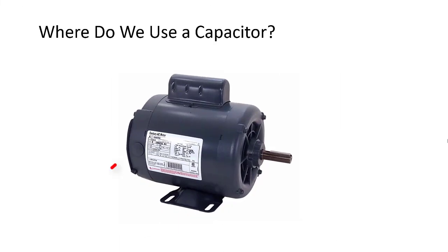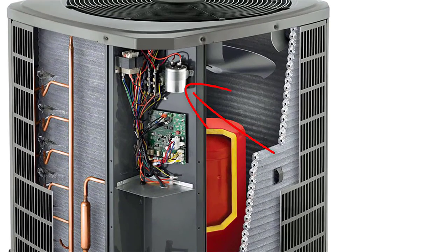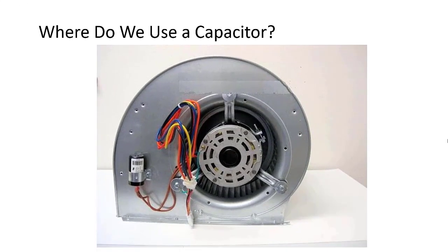On general use motors, they often are mounted on the side like this. In HVACR, they are often mounted external to the motor for easier access. In this case, it is mounted with the other electrical components away from the motors. This one is mounted on the side of the blower housing because it is easier to access than if it were mounted on the motor itself.